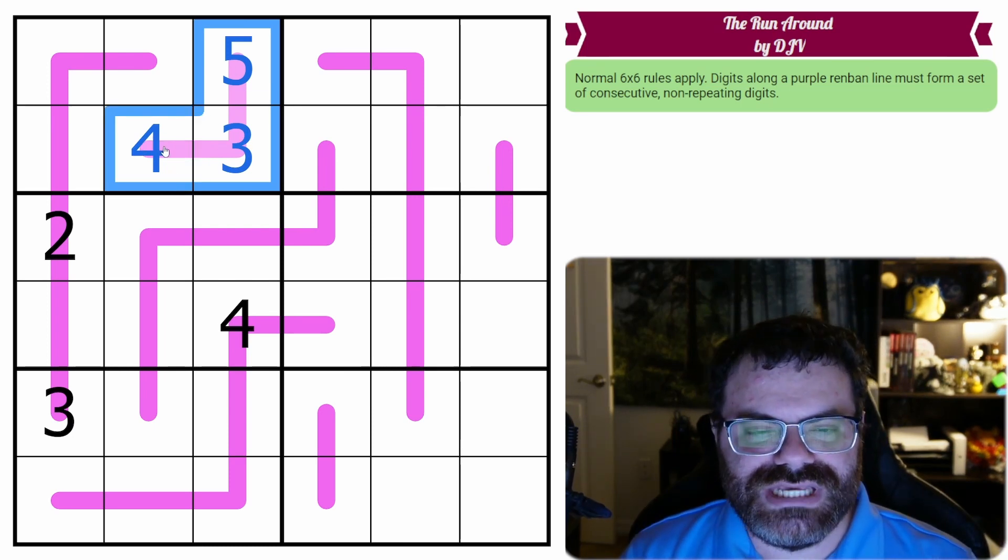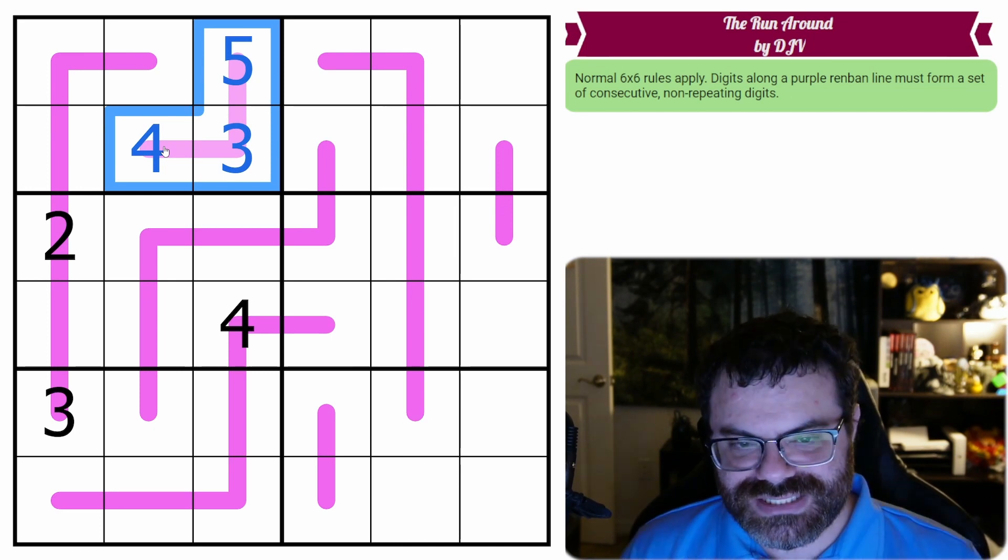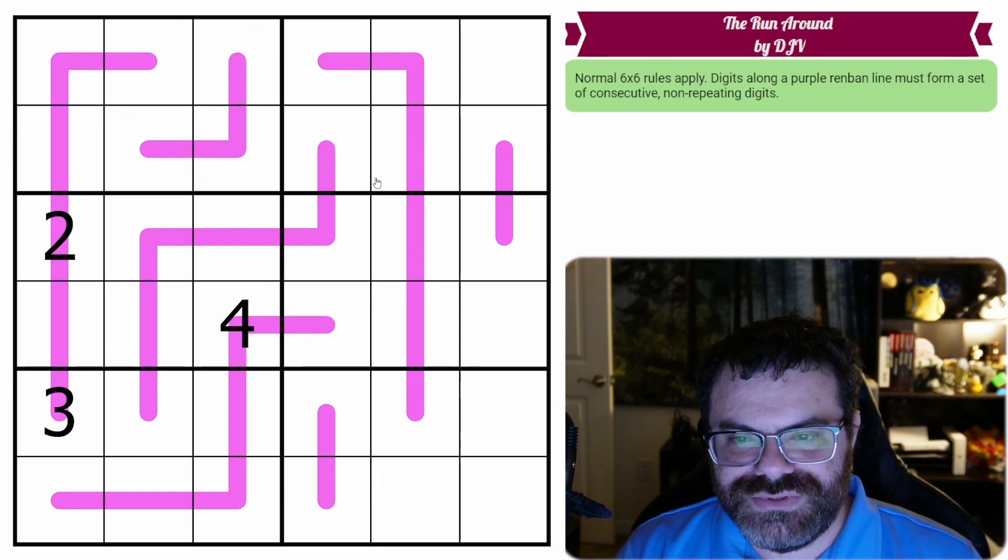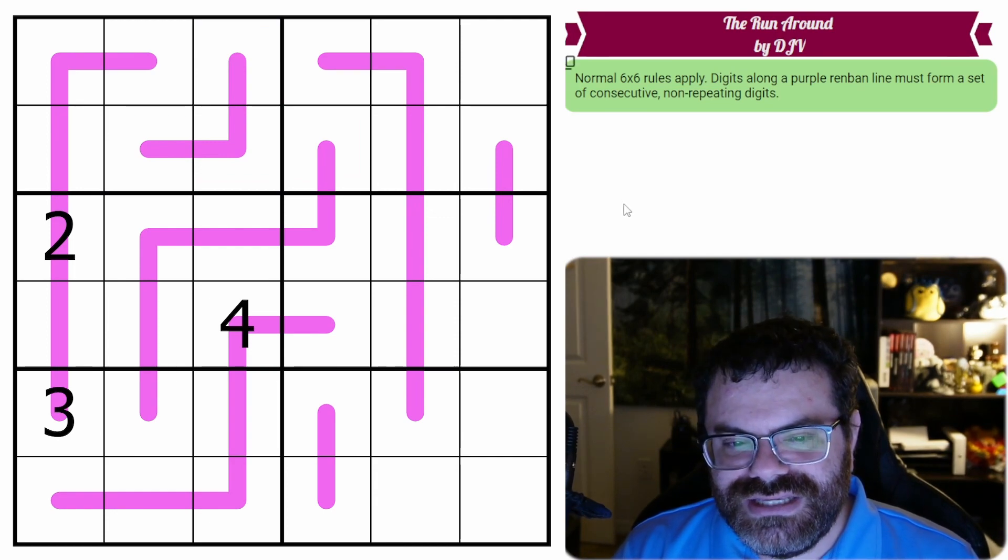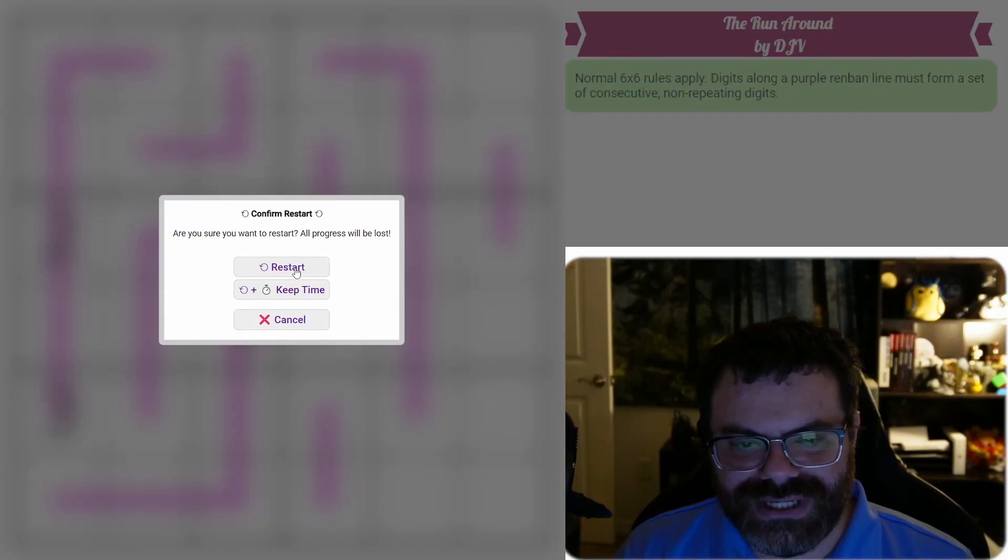There's plenty of others, but basically if you take the digits as a whole that got placed on the RenBand, they need to be consecutive and they can't repeat. So those are the rules. There's a link in the description if you want to try the puzzle yourself, and I am going to get started right now.